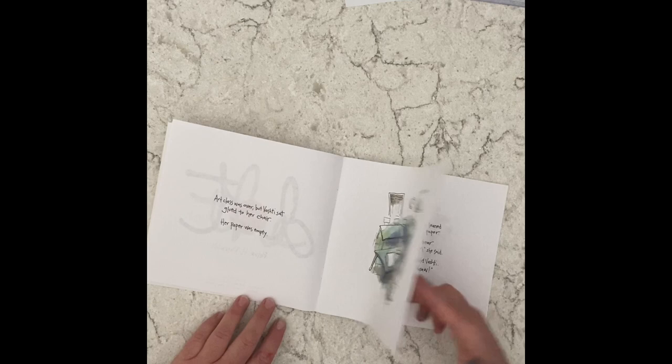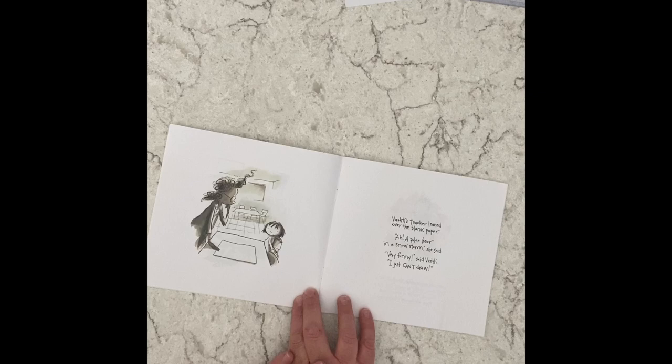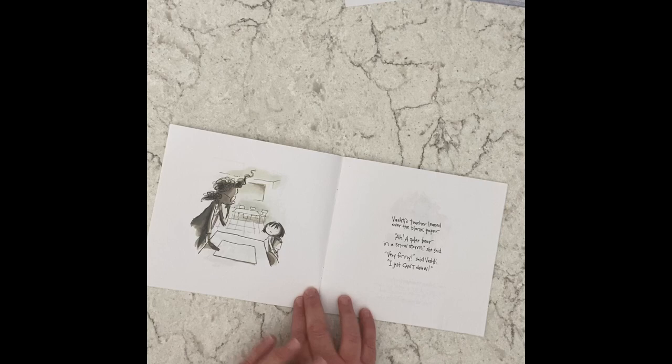She's looking a little angry. Vashti's teacher leaned over the blank paper. Ah, a polar bear in a snowstorm, she said. Very funny, said Vashti. I just can't draw.